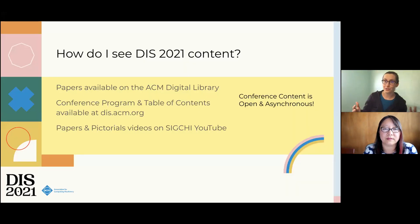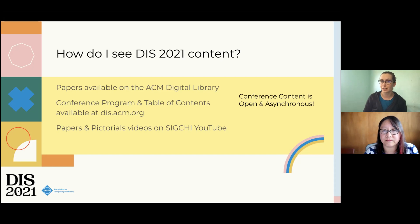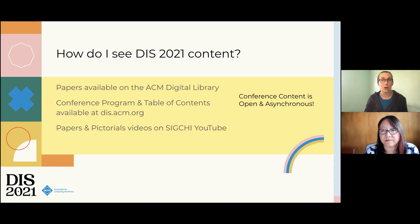You might be wondering: how do I see DIS 2021 content? All of our papers are available on the ACM Digital Library. There is a conference program and table of contents available at dis.acm.org, and all of our papers and pictorials have videos posted on SIGCHI YouTube. The perk of this is that all conference content is open regardless of whether you have registered, and is available asynchronously — there are no live sessions you must attend. You can watch videos and read papers at your own convenience.